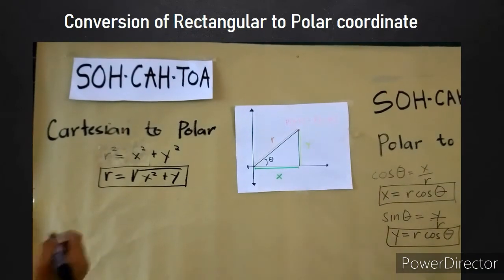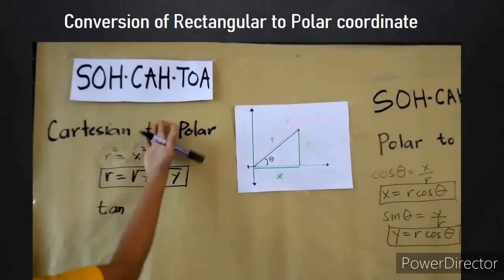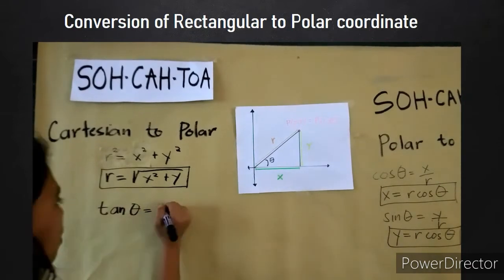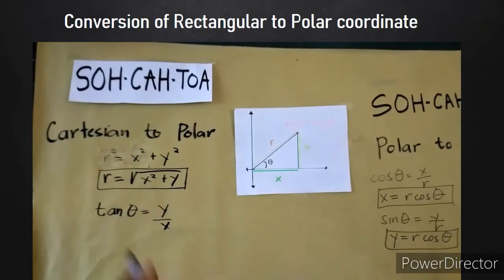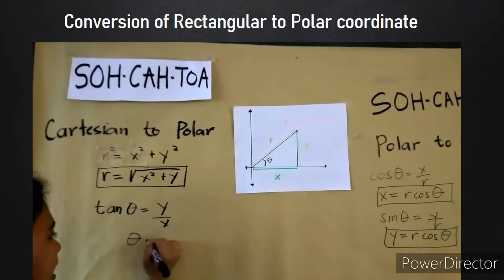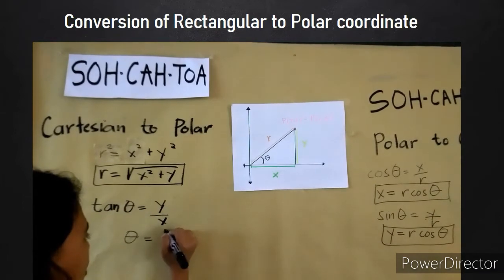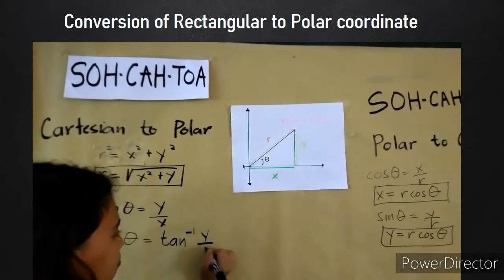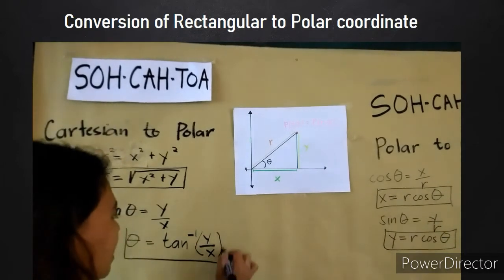In finding the value of θ, we know that tangent θ — through SOHCAHTOA — is equal to opposite over adjacent, which is y over x. From this, we derive that θ is equal to the inverse tangent of y over x. This is the formula in finding θ.